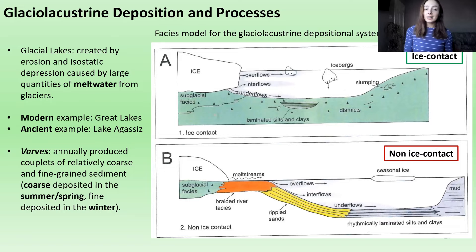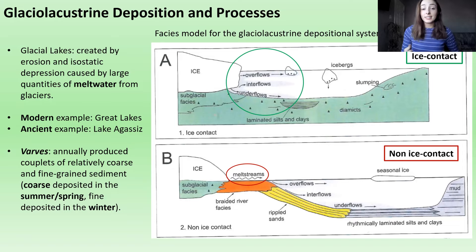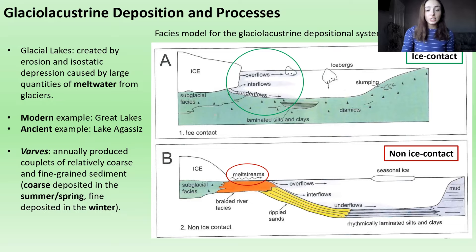In the ice contact system, there is direct contact between the glacial ice and the lake water. This causes meltwater and glacially-held sediment to deposit directly into the lacustrine system, either from calving glaciers — which drop drop stones — or rainout diamict. In the non-ice contact system, melt streams and braided fluvial systems bring glacial meltwater and sediment to the lacustrine system indirectly.